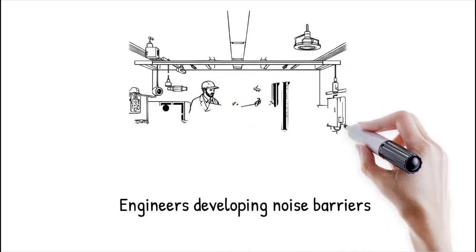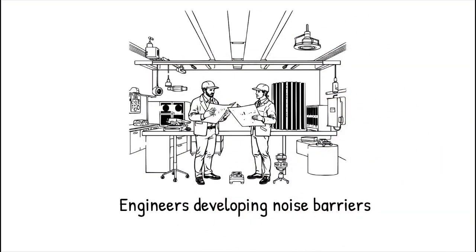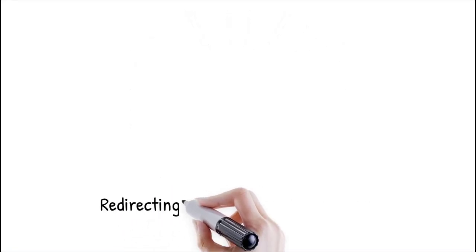Engineers are developing acoustic barriers that use cloaking principles to redirect or absorb noise before it reaches residential or quiet zones. This technology could be used in concert halls, hospitals, and schools to create silent environments without the need for bulky soundproof walls.